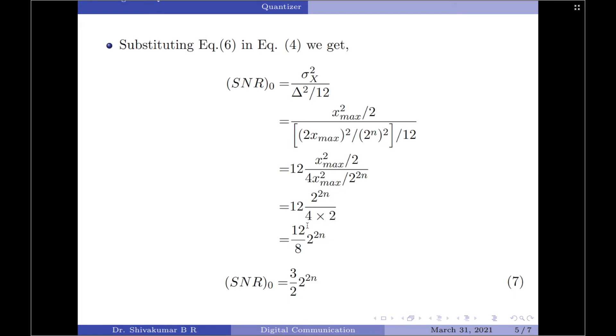Upon simplifying, we will get it as 12 divided by 8 into 2^(2n), which equates to 3/2 into 2^(2n). This is the expression for the output signal to noise ratio of a mid-riser quantizer.